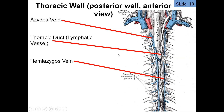Another structure here is the thoracic duct — a very large lymphatic vessel shown here in white. The lymphatic vessels throughout the body gather excess interstitial fluid and communicate it from lymphatic capillaries to larger lymphatic vessels. Eventually this all culminates in the thoracic duct or the left lymphatic duct, which communicates the lymphatic fluid into the venous system via the internal jugular vein — returning lymph fluid back into our circulatory system.